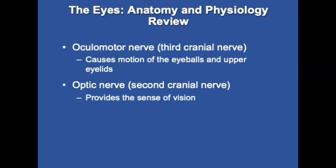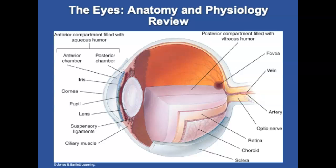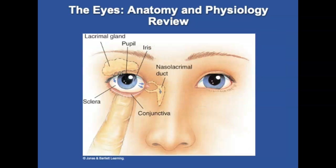Let's talk about the eyes first with an anatomy and physiology review. The eye connects to the brain by two nerves: the ocular motor nerve, which is the third cranial nerve — it innervates the muscles that cause motion of the eyeballs and upper eyelids and carries parasympathetic nerve fibers causing pupil constriction and lens accommodation — and the optic nerve, the second cranial nerve, which provides the sense of vision. Figures show the eye structures and the lacrimal system of tear ducts and glands.